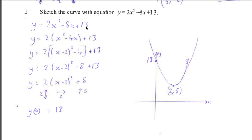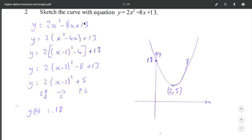So 2 times 0 squared minus 8 times 0 is still 0, plus 13. So when x is 0, y is 13, which gives me the y-intercept.